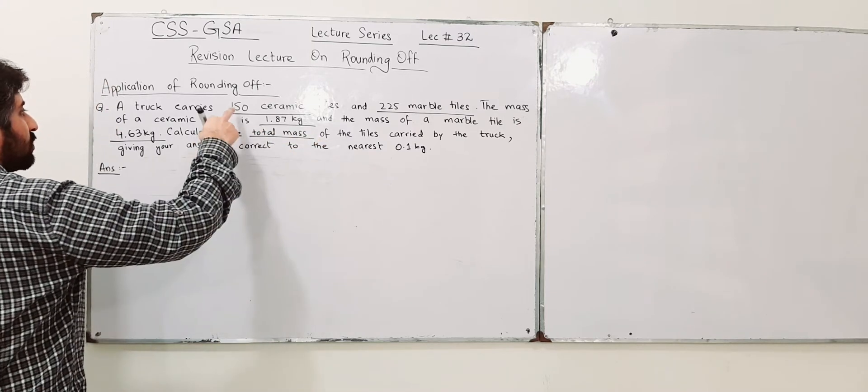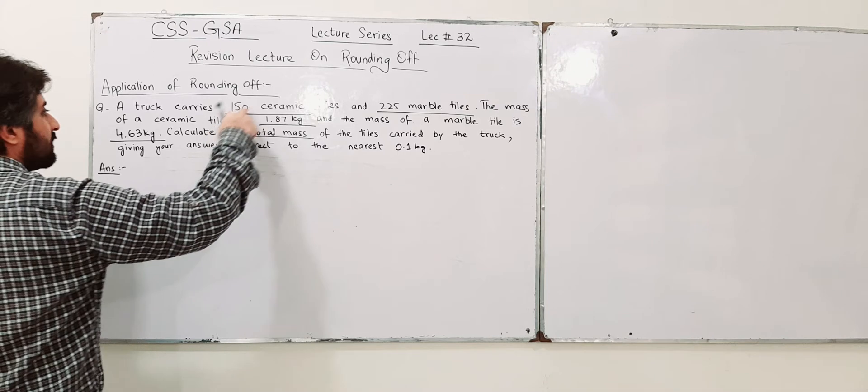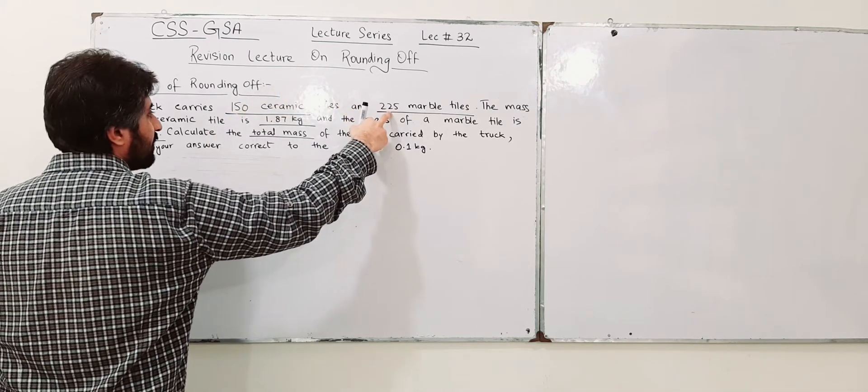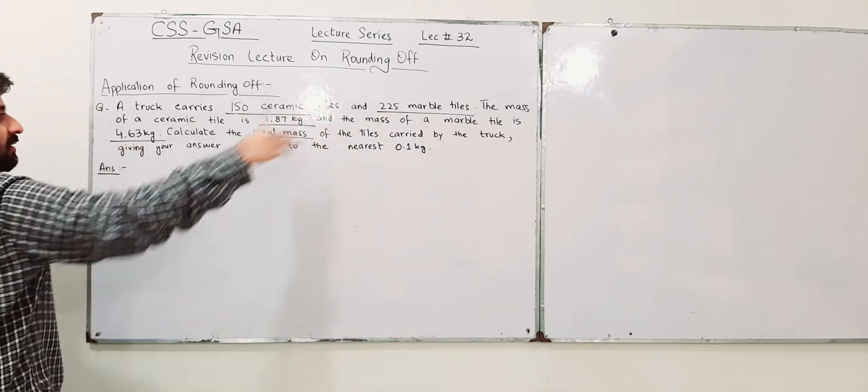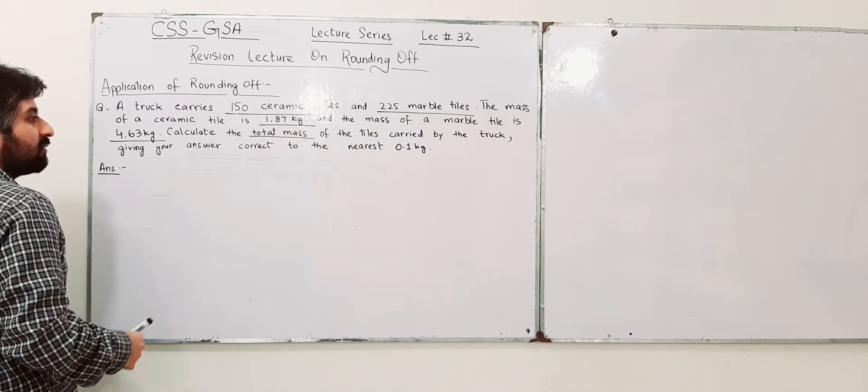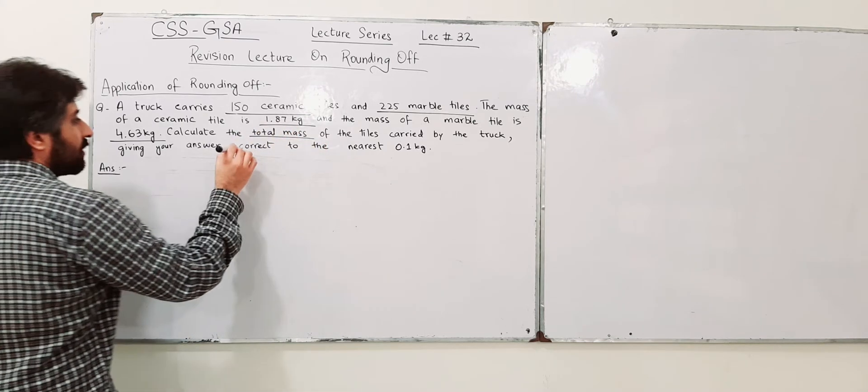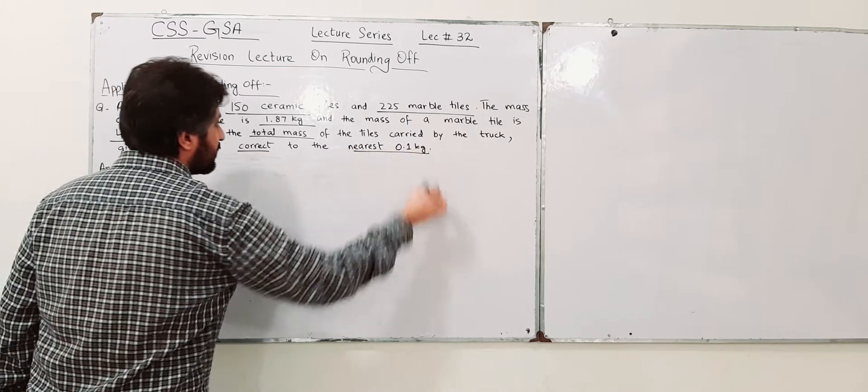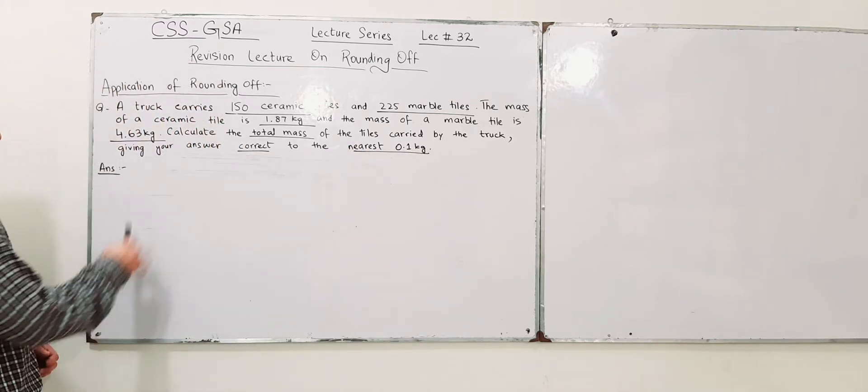And the mass of marble tiles is 4.63 kg. You have to calculate the total mass, that is the mass of 150 ceramic tiles and 225 marble tiles. Give your answer correct to nearest 0.1 kg.